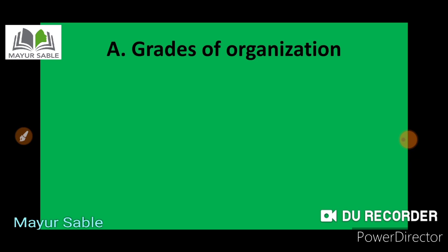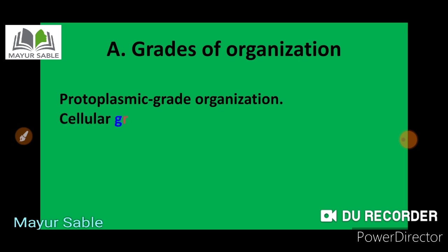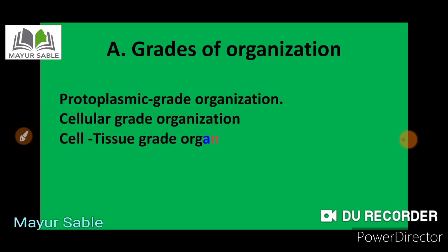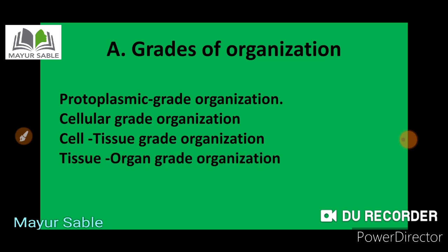The first criteria is grades of organization. The body of animals is made up of cells. In the case of multicellular animals, many cells perform different functions, while in unicellular animals the body is made up of a single cell and all functions are performed by that single cell. The body organization of unicellular animals is referred to as the protoplasmic grade.